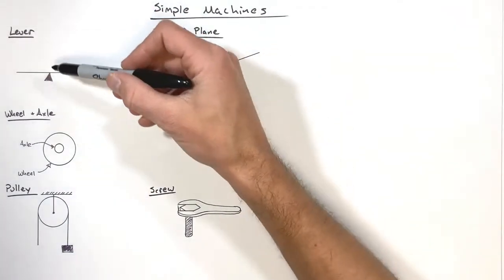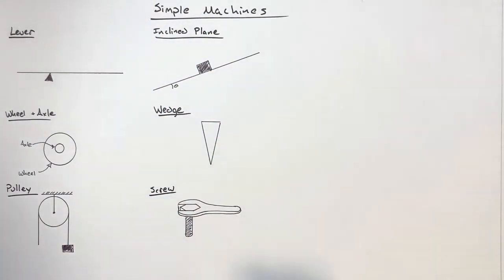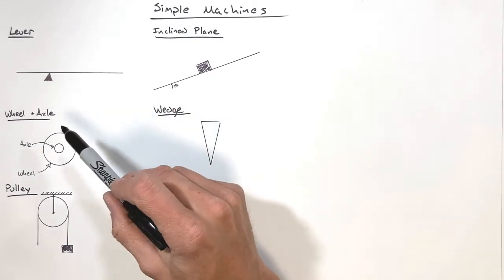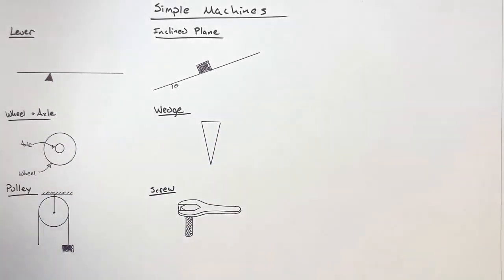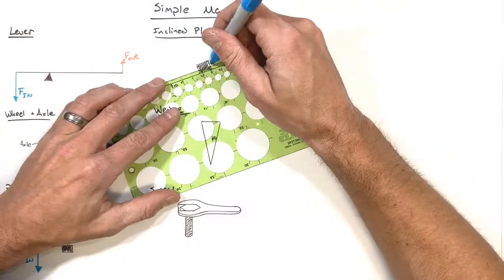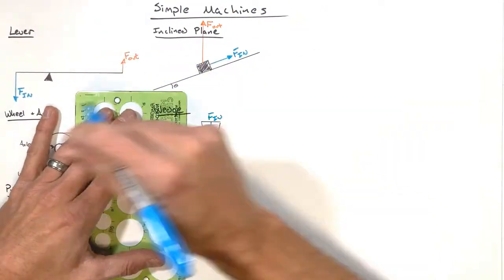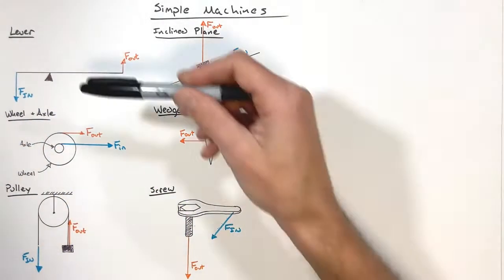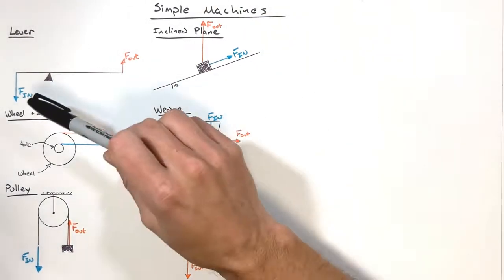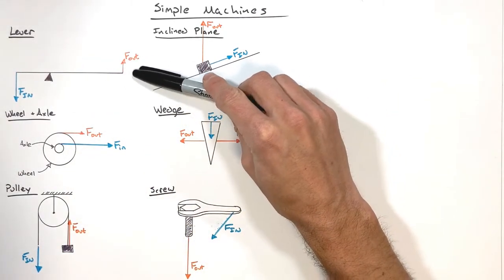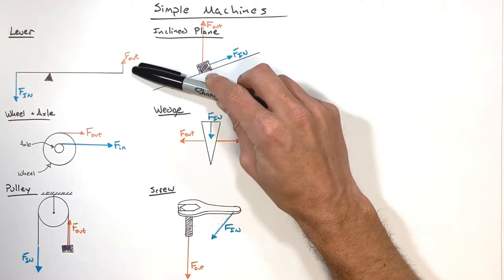What I want to do first is look at truly what's going on with each of these simple machines — specifically the forces we put into them and the forces we get out. For each of these simple machines, depending on how they're arranged, there's an input force. That simple machine somehow transfers that force to an output side, and we get what we call the output force.